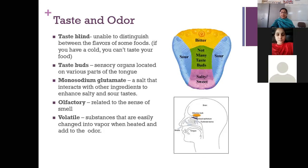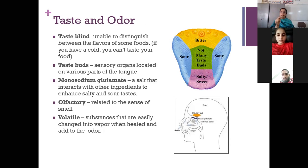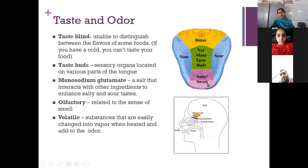Taste blindness occurs whenever you have a cold and congestion of the taste buds, so you are not able to distinguish between flavors of some foods — if you have a cold, you can't taste your food. Your taste buds are located on various parts of your tongue. You have four taste regions: the bitter taste buds are on the backside, sweet taste buds lie in the front, salty taste buds lie on the sides of the tongue, and there are not many taste buds in the center.